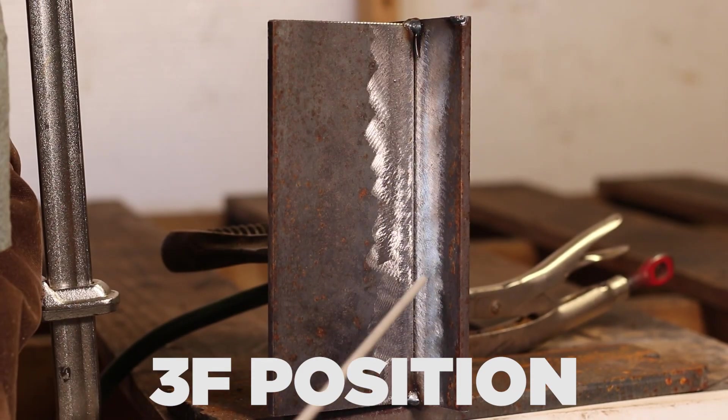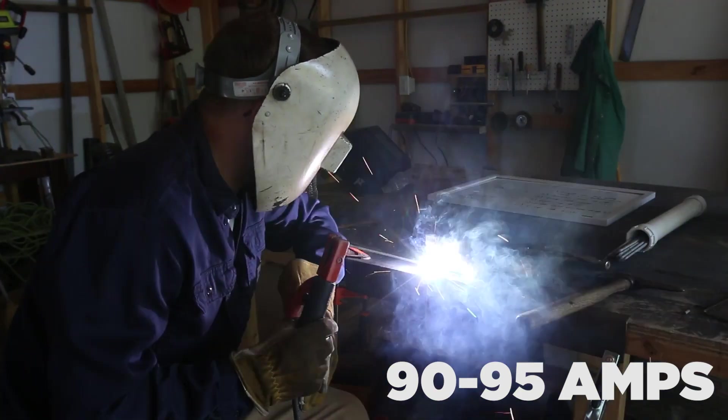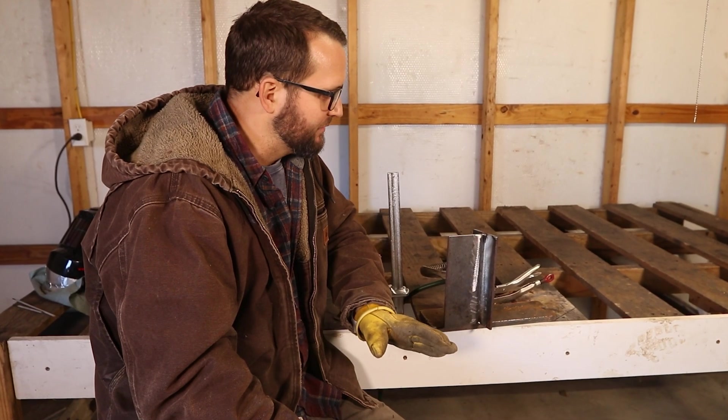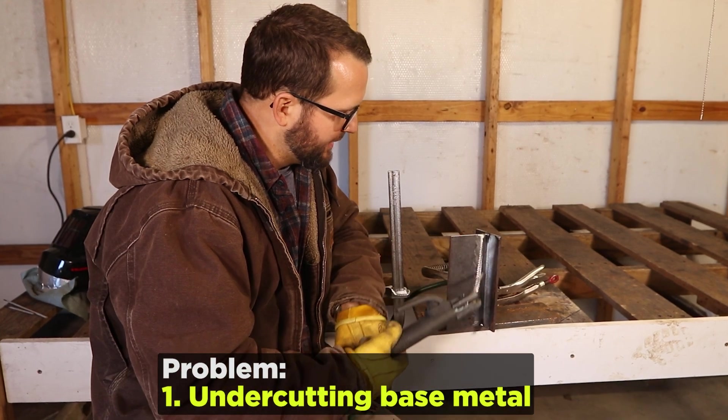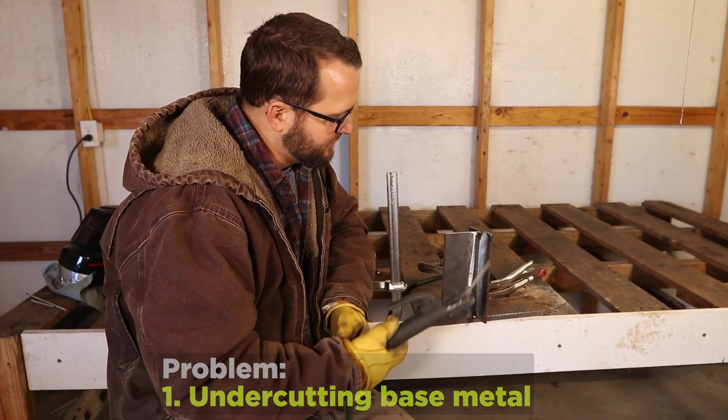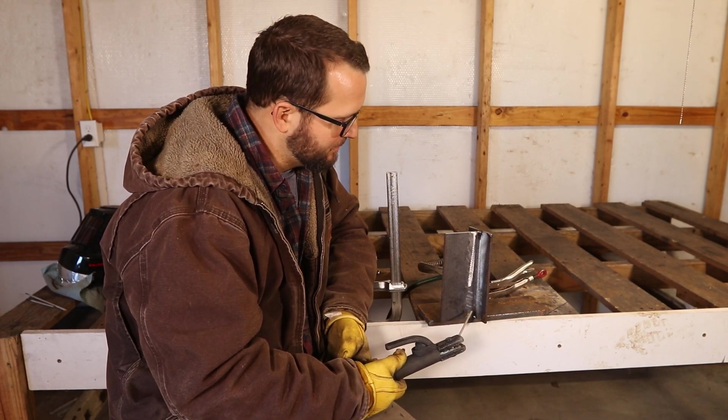So we're doing 3F 7018. We're using a 3/32nd rod. We're going to weld between 90 and 95 amps. The first issue that I always notice my students having was as they're going up the plate, they're undercutting the plates really hard. And the reason for that, I think, is because they're holding too far away from the plates themselves.